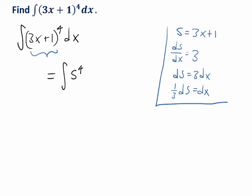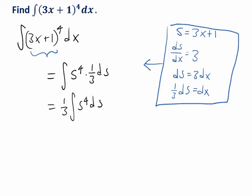We're using that information in our substitution. We've already replaced the 3x plus 1 with s. Now let's replace the dx with 1 third ds, like this. Now this coefficient 1 third, I could pull that out front, and now I need to find the antiderivative of s to the 4th ds.